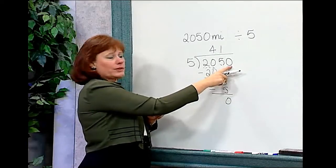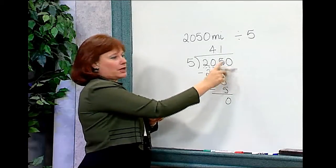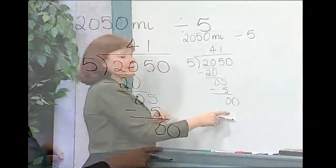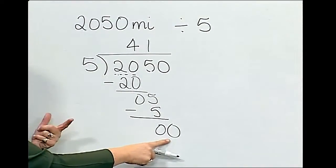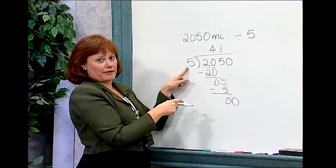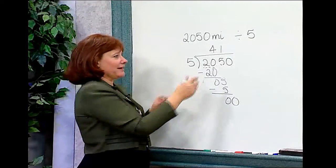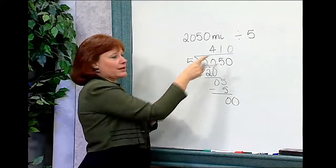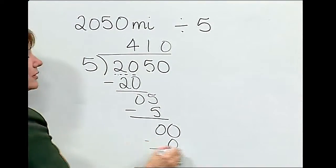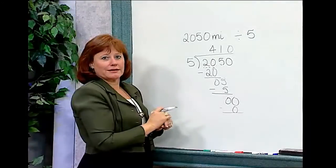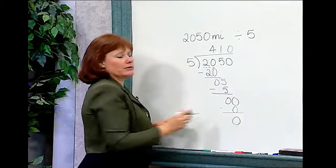This last zero always has to be used in the problem. So I'll bring that number down here. And I'm taking five into zero. This may be the easiest problem of all. Can you think of a number that when you multiply it by five you get zero? I think so. That number is zero. Zero times five is zero. There's almost no need for subtraction, but we'll do it anyway. Zero minus zero is zero.